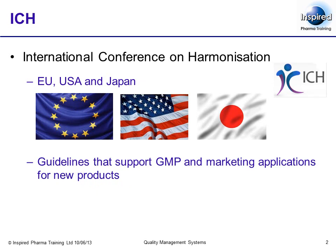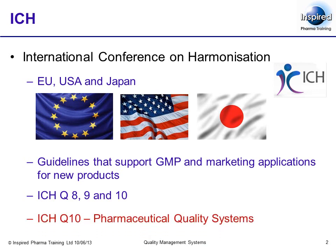In the past 10 years, they have produced three guidelines that have ramifications for pharmaceutical quality management. These are called ICH Q8, 9 and 10. The Q is because they belong to their family of quality guidelines rather than the ICH Safety or Efficacy guidelines. Of particular note to us will be ICH Q10, Pharmaceutical Quality Systems, though we will quickly cover the principles of ICH Q8 and Q9 first.